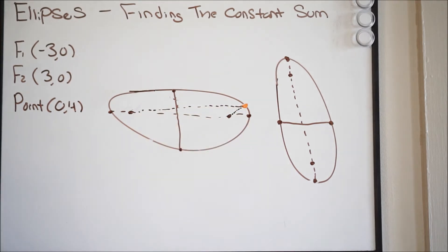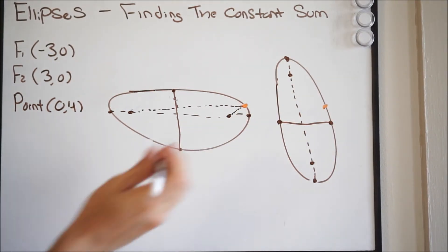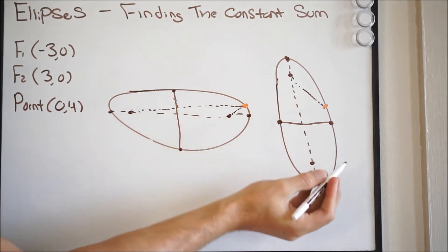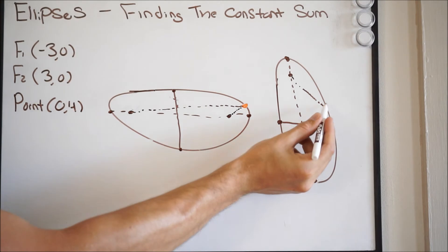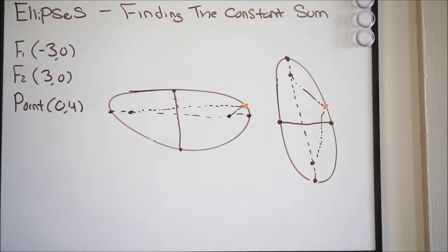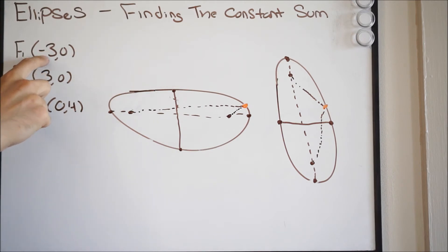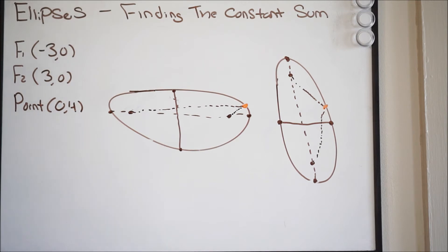On a vertical ellipse it looks similar — you just have your point somewhere on the ellipse and draw lines to that point from each focus, and adding those two distances gives you the constant sum. Now for our problem, we're given the coordinates of both foci: foci one at negative three comma zero, and foci two at three comma zero.